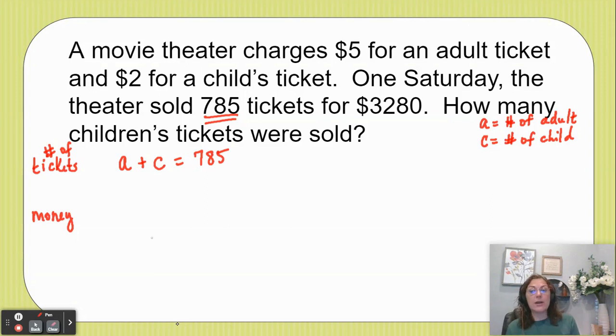Now, second equation we'll deal with the money. So if we want to know how much money we make for the adult tickets, we're going to take the price of an adult ticket times the number of adult tickets. So the price of an adult ticket was $5, so we'll multiply that times the number of adults to get the amount of money we made for the adult tickets.